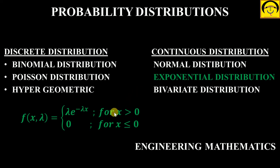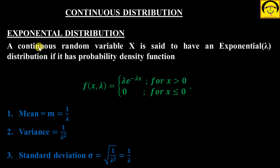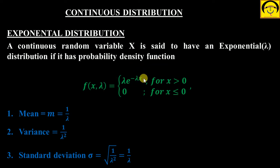So let's start the video. First of all, welcome to Engineering Mathematics. Exponential distribution — what is exponential distribution? Ek continuous random variable, because it is a part of continuous distribution. Isse pahle discrete random variable ki baat hoti thi; yahan continuous distribution hai, to continuous random variable ko hum exponential distribution use karenge. Uske PDF — means probability density function — woh iss tarah ka ho.